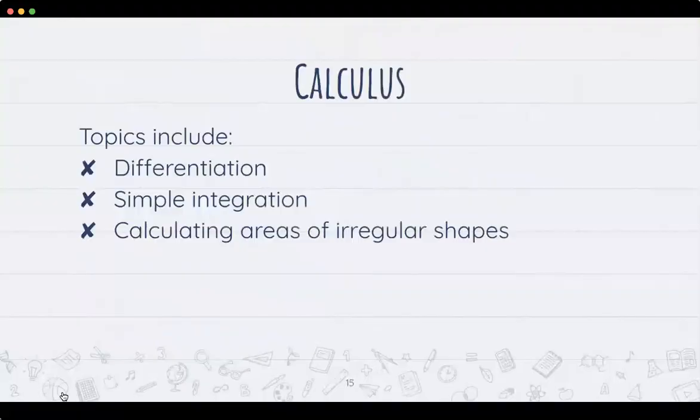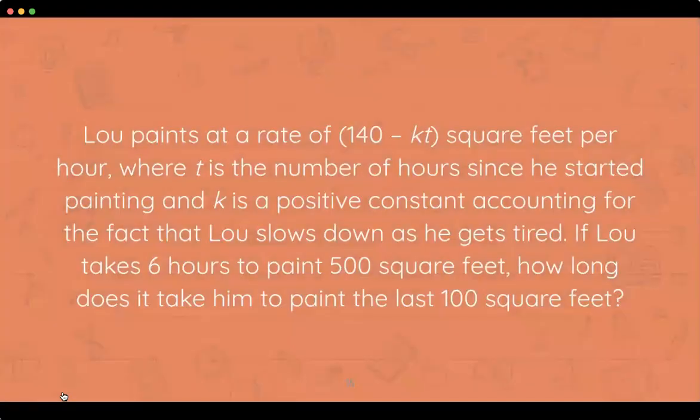Then we have calculus, which includes differentiation, simple integration, and calculating areas of irregular shapes. An example: Lou paints at a rate of 140 minus K·T square feet per hour, where T is the number of hours since he started and K is a positive constant accounting for him slowing down as he gets tired. If Lou takes six hours to paint 500 square feet, how long does it take him to paint the last 100 square feet? That's what we'd study in the calculus portion.